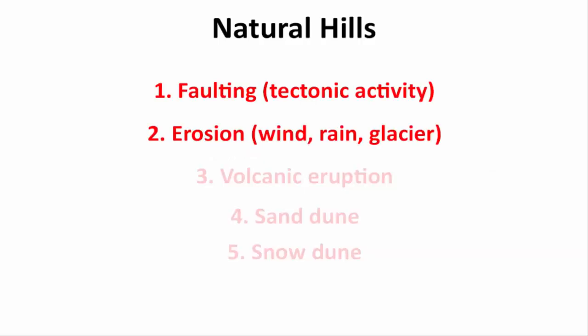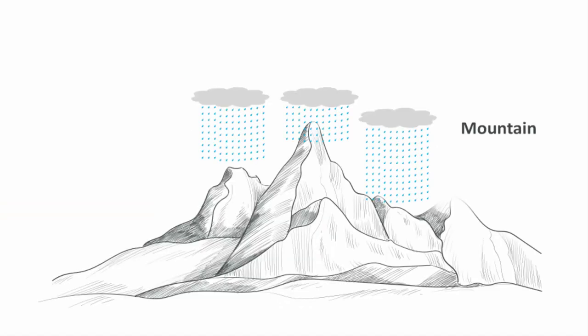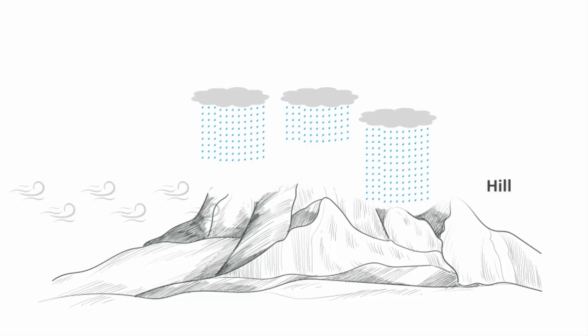Hills can also be created by erosion. Imagine a high mountain — for thousands of years, if it gets eroded due to rain, wind, or glacier activity, then definitely the mountain's height will reduce. This process is called wearing down by erosion. Mountains wear down as water and wind break their rocks into sediments and carry them away.